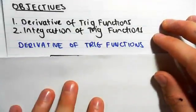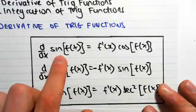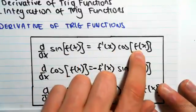So first of all, the derivative of trig functions. We're going to be looking at the three main types. When you differentiate sin f(x), you get f'(x), the derivative of that function, cos f(x).